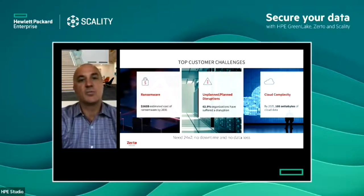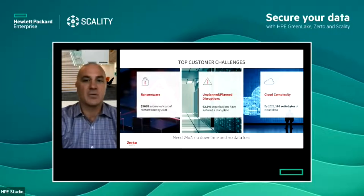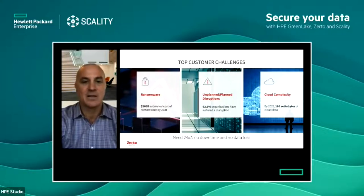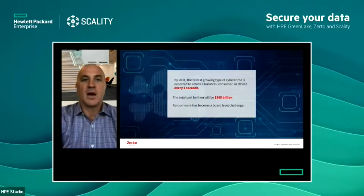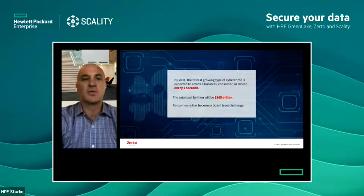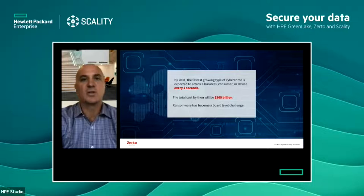The third challenge is cloud complexity — by the year 2025 there will be 100 zettabytes of cloud data. This really equates to the need for 24×7 no downtime and no data loss. By 2031, the fastest growing type of cyber crime is expected to attack a business, a consumer, or a device every two seconds.